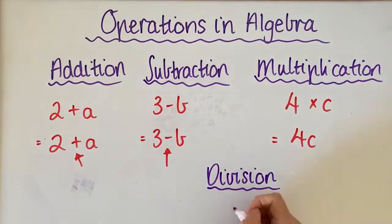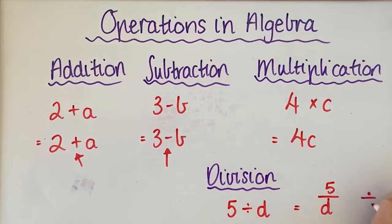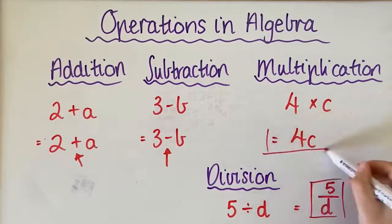And the last one is division. So say you had something like 5 divided by D. Well, that would actually become 5 over D. Now a really good way to remember this is that division actually looks like a fraction. It's something over something else. So it's a good way to remember that this gets written as a fraction.